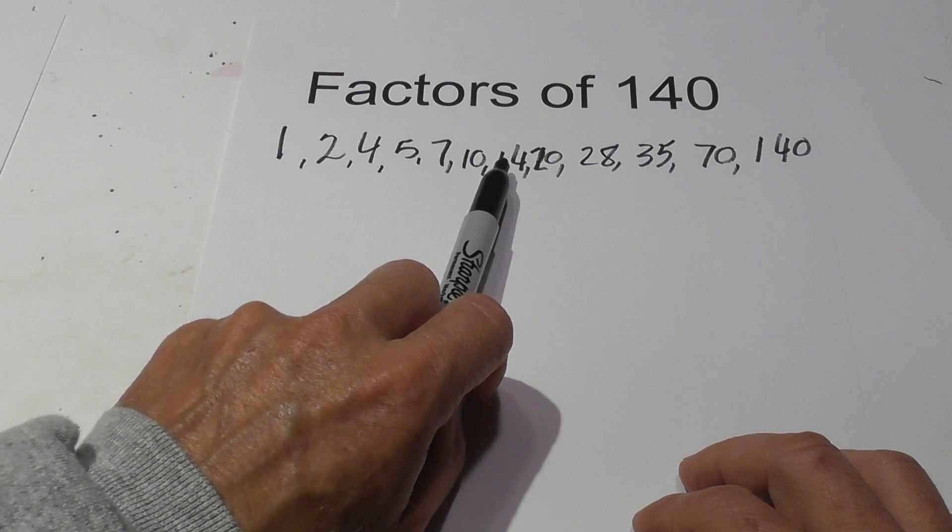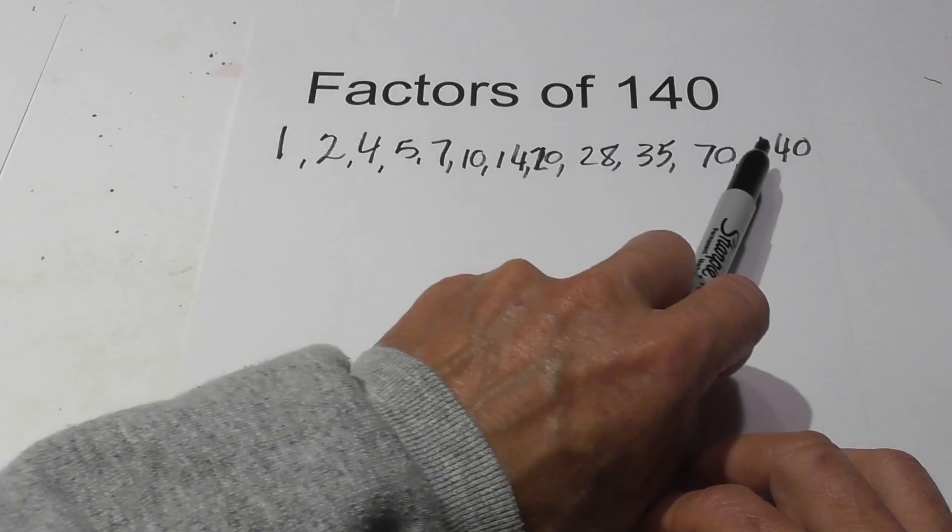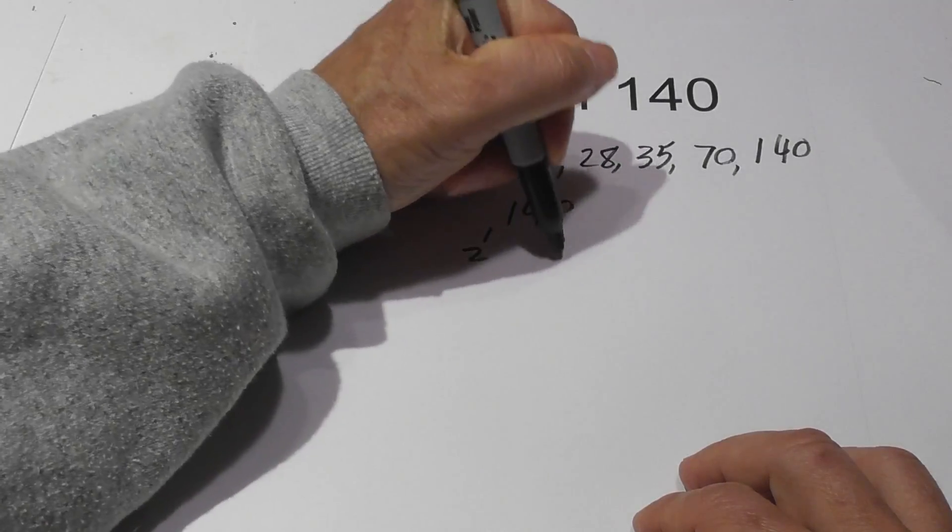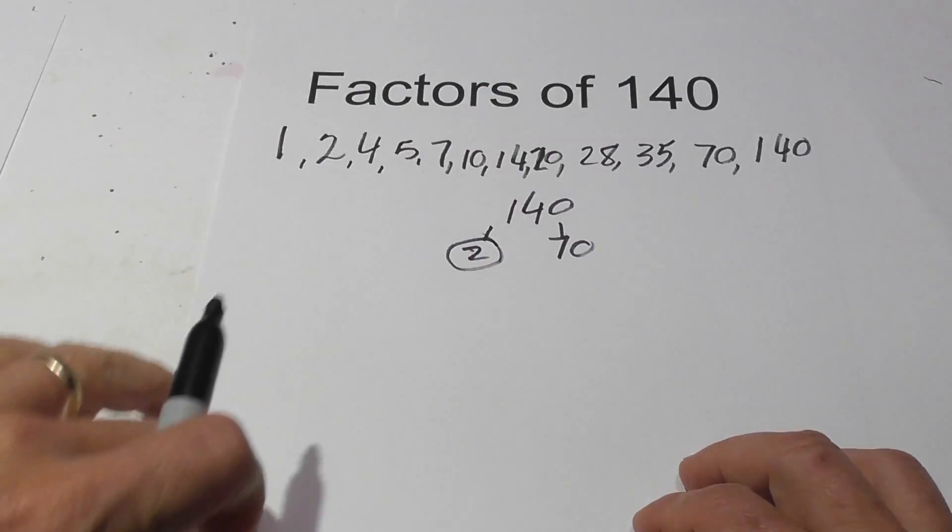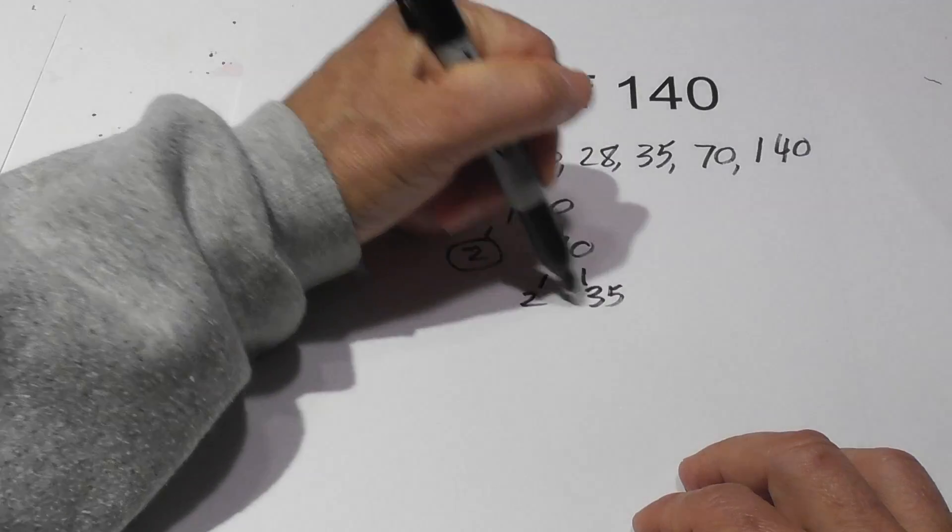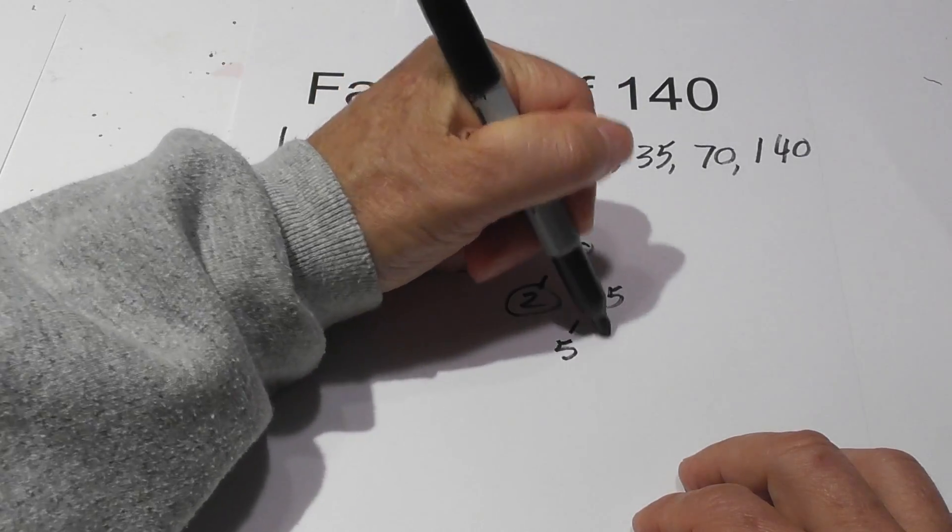And a factor tree goes like this: let's begin with 2 times 70. Circle 2 because it is prime. 2 times 35, circle the 2 because it is prime, and then 5 times 7. Circle both of them because they are prime.